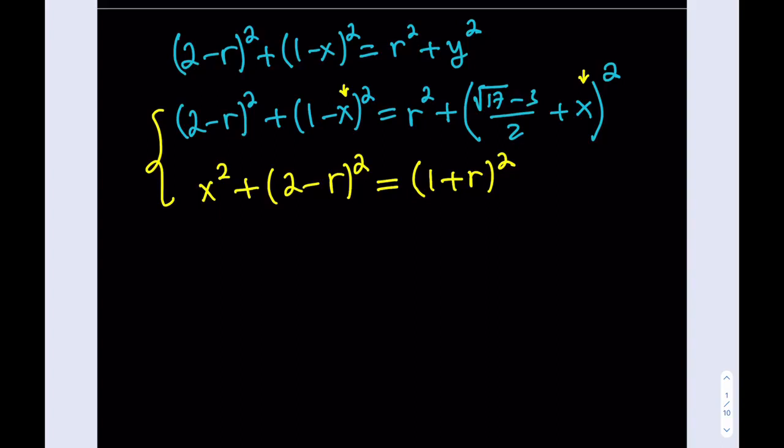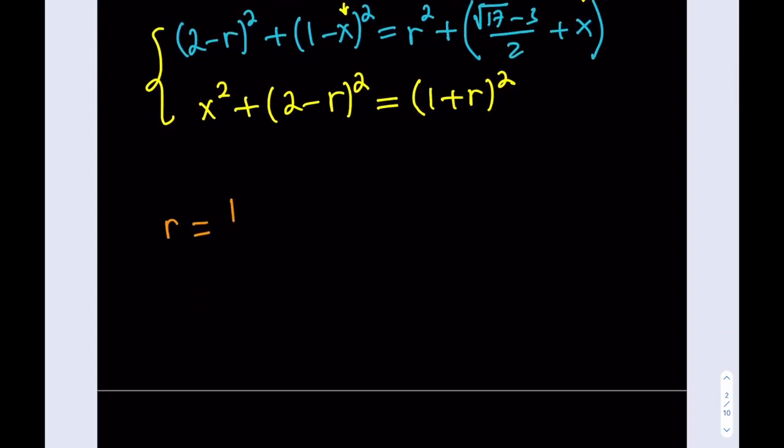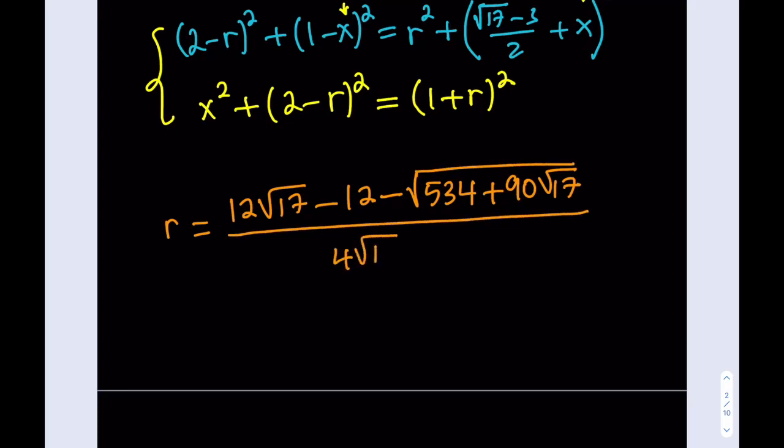But here comes the solution. Ta-da! Alright. So, based on these two equations. The radius of the blue circle is equal to 12 times the square root of 17, 15 minus 12 minus the square root of 534 plus 90 times the square root of 17 all over 4 times the square root of 17 minus 4. That's it. What a result. So, basically, based on my calculations, quote-unquote, this is the result.